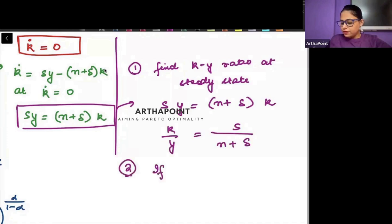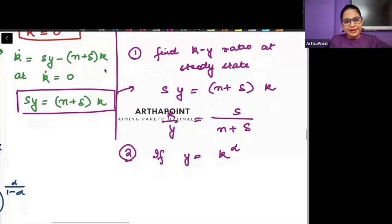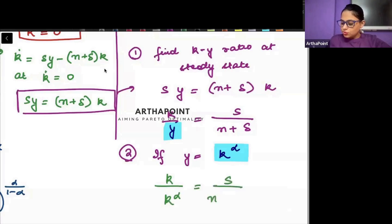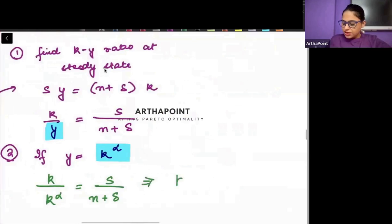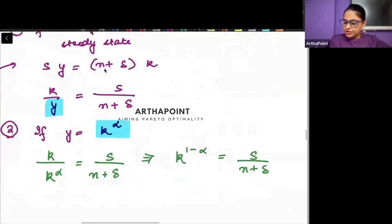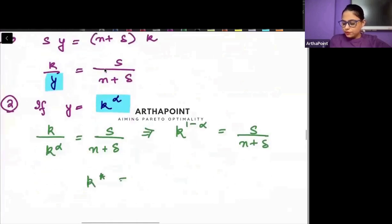Second, if we know that y is small k to the power alpha. This is what we had derived. So, this y ki jaga per I can plug this small k to the power alpha. And I will get k upon k to the power alpha is equal to s upon n plus delta. So, this will give me k to the power 1 minus alpha is equal to s upon n plus delta. And you can find the value of steady state value of capital s upon n plus delta to the power 1 upon 1 minus alpha.